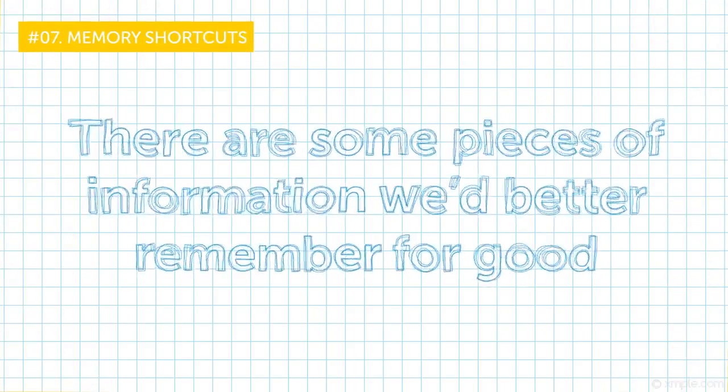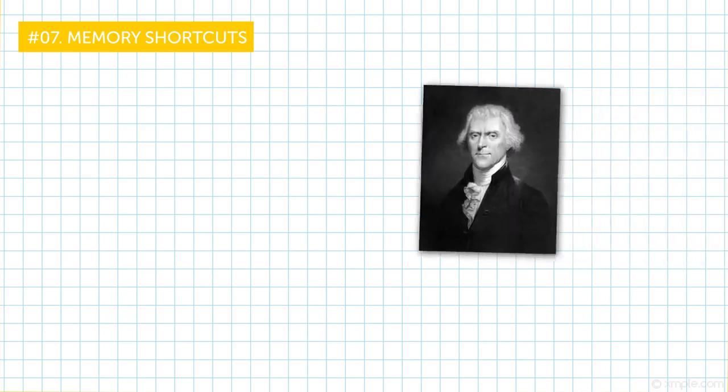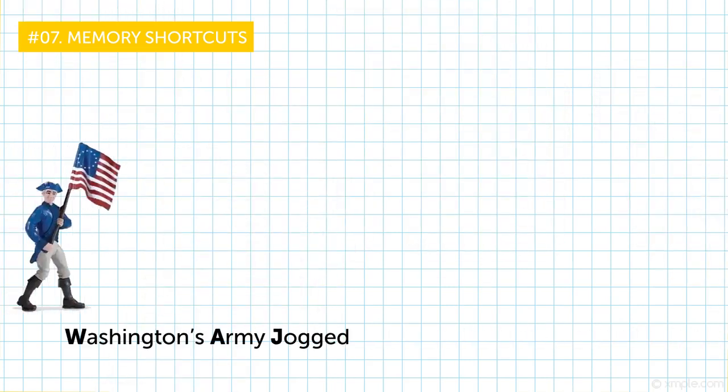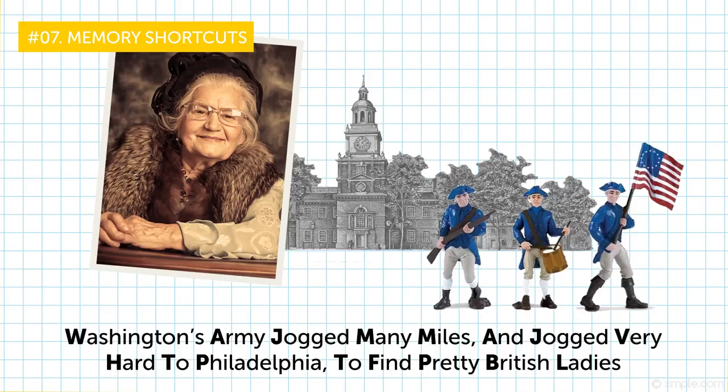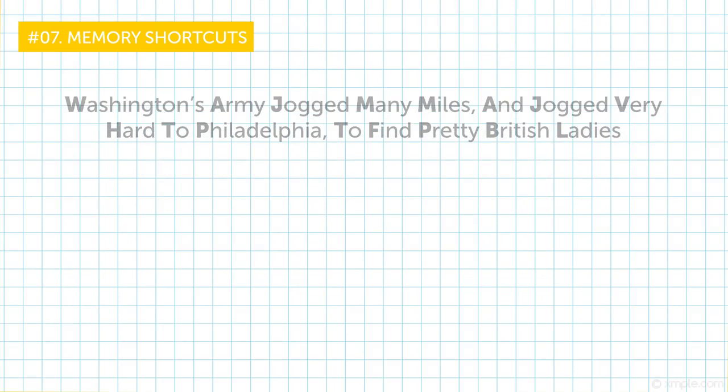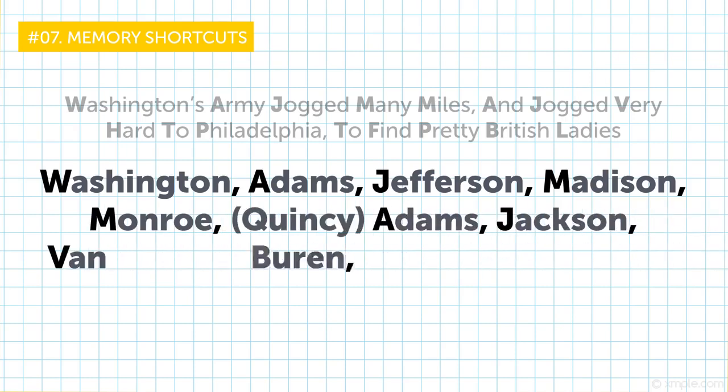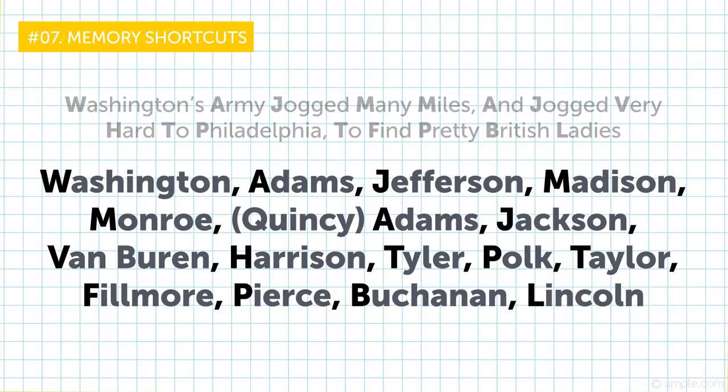Number seven, memory shortcuts. There are some pieces of information we'd better remember for good. Important historical moments, countries and capitals, U.S. Presidents. Can you name the first 16 of them? Washington definitely, and then it was Jefferson or Madison. I can't tell you, but I can definitely tell you that Washington's army jogged many miles and jogged very hard to Philadelphia to find pretty British ladies. Makes no sense? Oh yes, it does. Here is a list of the first American presidents by the last name. Washington, Adams, Jefferson, Madison, Monroe, Quincy Adams, Jackson, Van Buren, Harrison, Tyler, Polk, Taylor, Fillmore, Pierce, Buchanan, Lincoln. So if you memorize this line, remembering the presidents will be way easier. You can try using mnemonic devices, those lines with a hidden meaning to keep other information in mind as well.